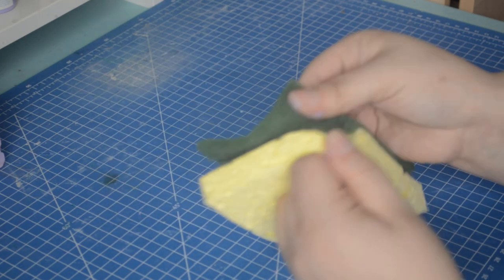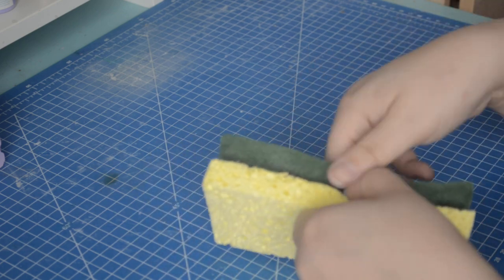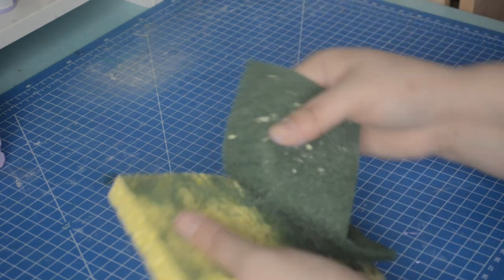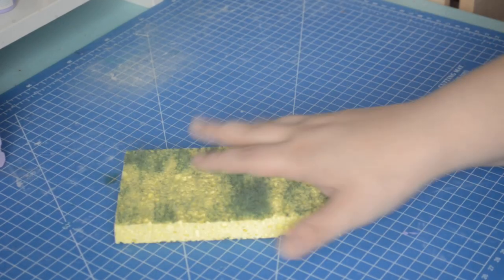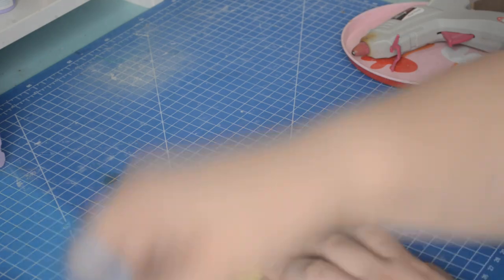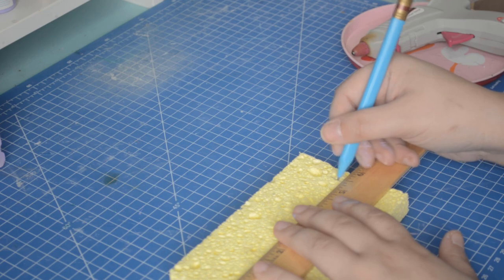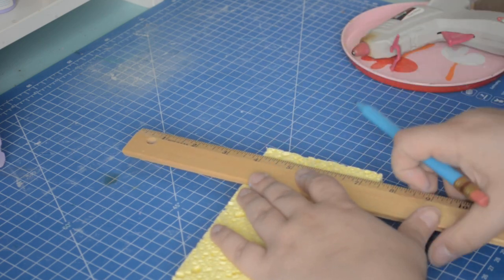If you can't find a sponge, anything soft or squishy will do—shoe insoles, bean bags, again, use your imagination. Measure the size of your bed base so you can cut your mattress to match, and you can use a pair of sharp scissors to cut the sponge.